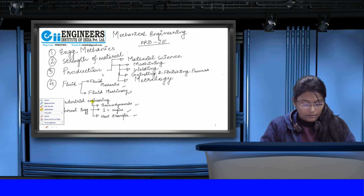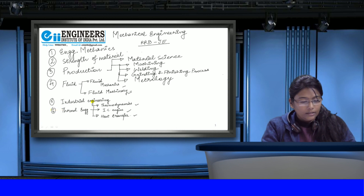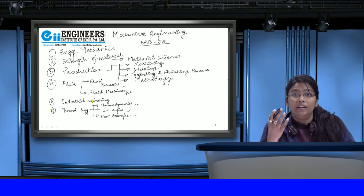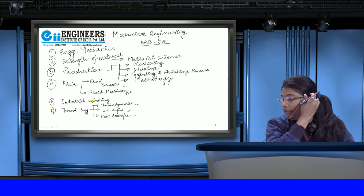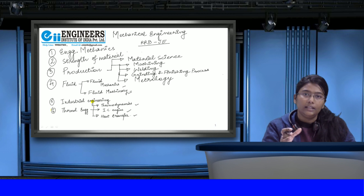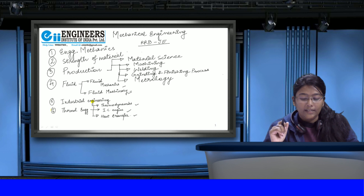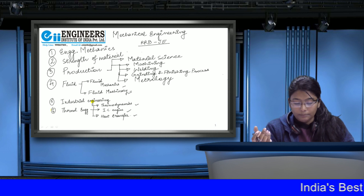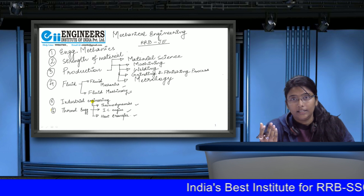Let's start with the introduction and the syllabus. I have divided the syllabus of mechanical engineering into 6 parts. The first part is engineering mechanics, the second part is strength of material, the third part is production, the fourth is fluid mechanics and fluid machinery, then industrial engineering, and the sixth part is thermal engineering — thermodynamics, IC engine, and heat transfer.